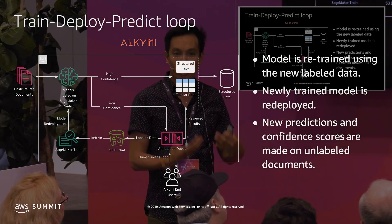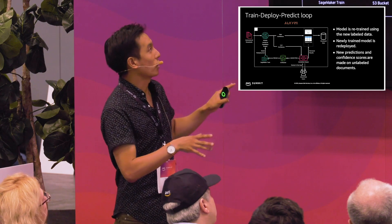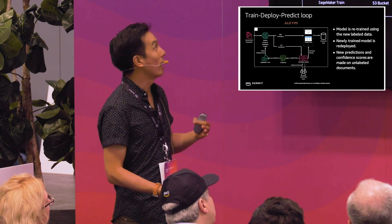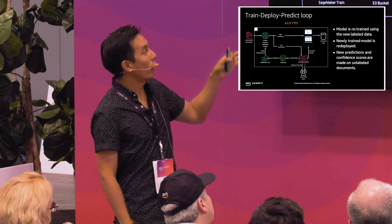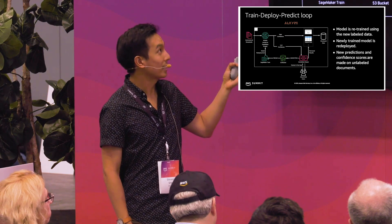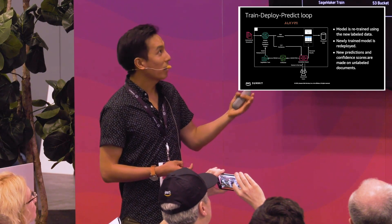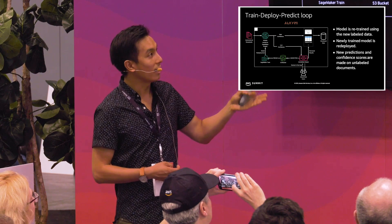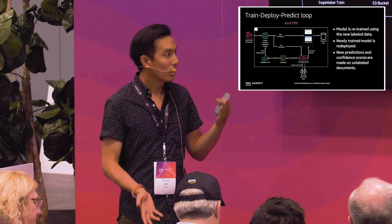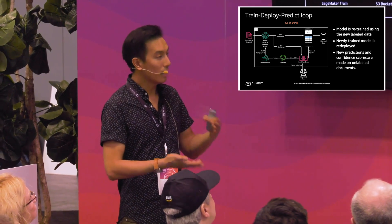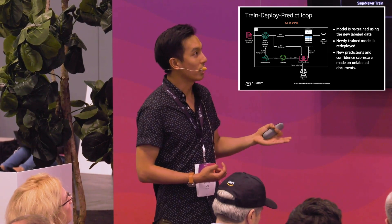Here's an architecture diagram of how this is implemented on AWS. On the left we have unstructured documents, which are run through models hosted on SageMaker Predict. Based on confidence levels, high-confidence documents are immediately sent to a structured data store, while low-confidence documents are sent to an annotation queue presented to the user for labeling. Labeled data is added to an S3 bucket and the model is retrained using SageMaker Train.